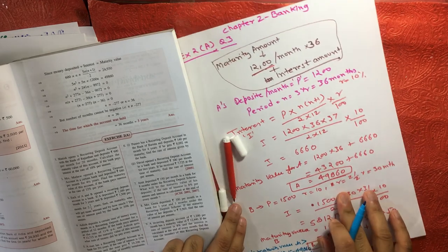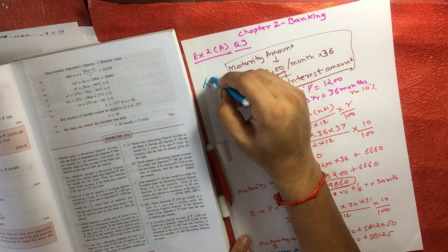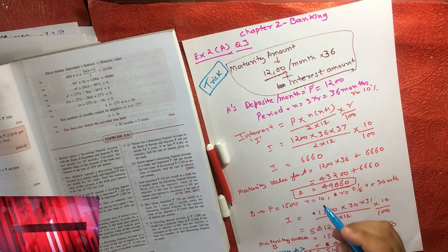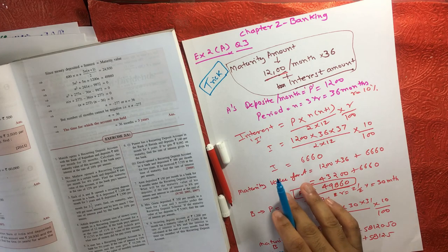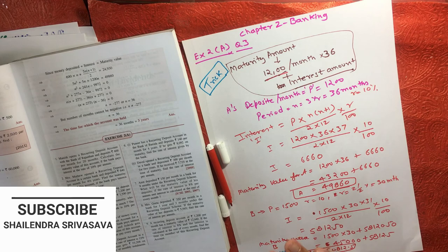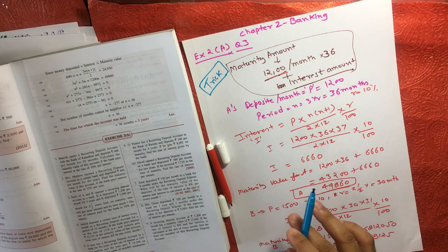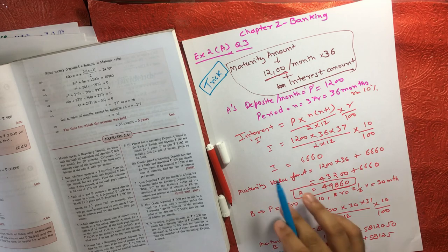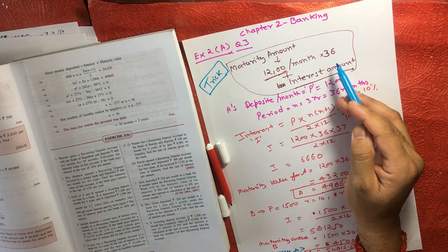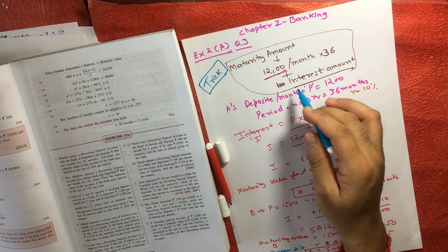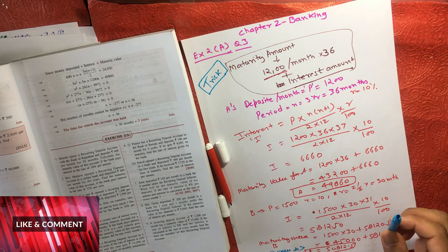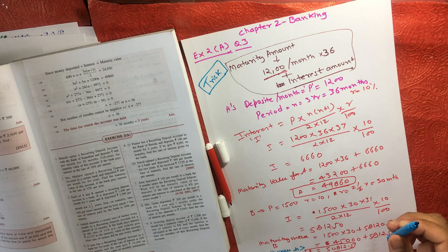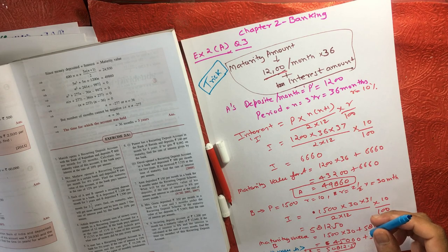The key concept here is understanding the meaning of maturity amount. Maturity amount is the amount you get when your deposit matures, and it includes the amount you pay per month multiplied by the duration, plus the interest amount — for example, 1200 × 36 + interest = maturity amount. That's all for Exercise 2A question number three. If you have any doubt, feel free to put your comment in the comment section. The next video will cover question number four. Bye bye and take care.